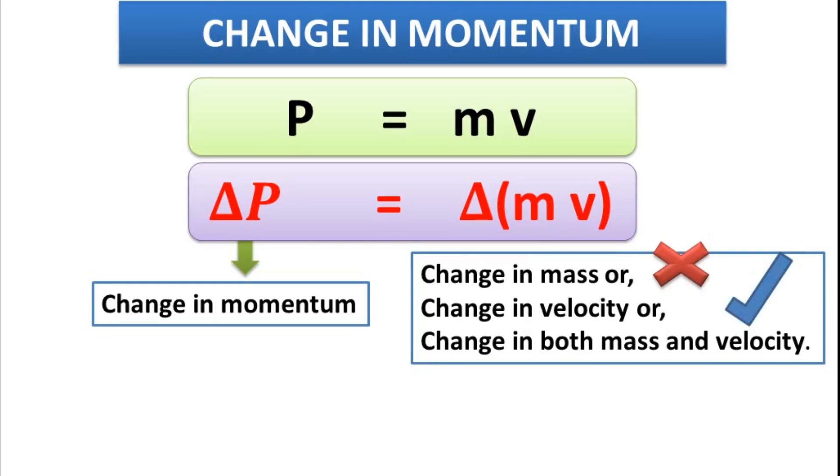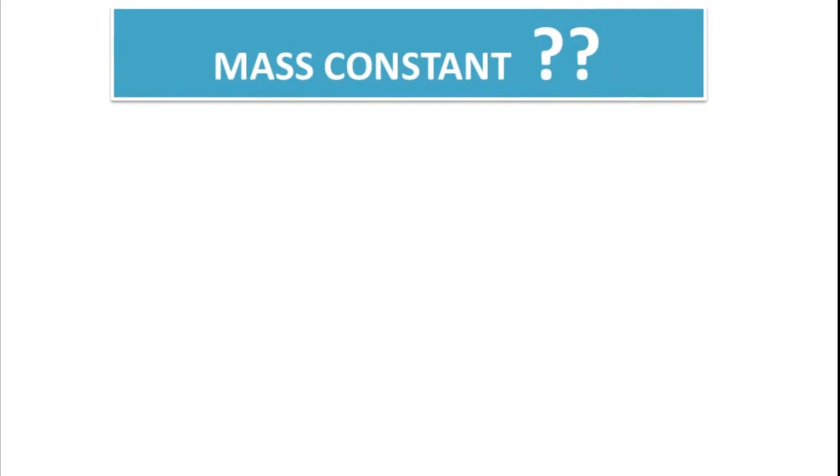So, we can write change in momentum as delta P is equal to M delta V. Here, we have assumed that mass of a body is constant. Why no delta with M? Because M is constant or not changing or if mass is constant, delta P is equal to M delta V. Now, listen carefully. Mass is not constant.